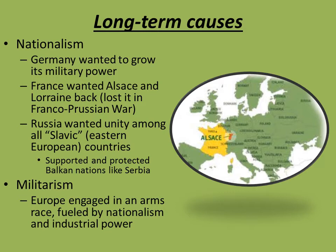France had a revenge motivation. They were very bitter and upset after they lost the Franco-Prussian War, and they wanted back what they had lost — namely Alsace and Lorraine, a pair of provinces on the border between France and Germany. They had been constantly fought over because the region was very rich in natural resources, and France really badly wanted that territory back under their control.